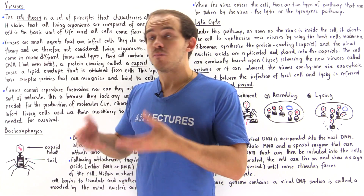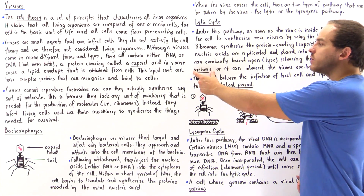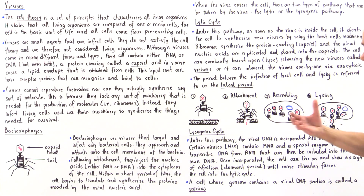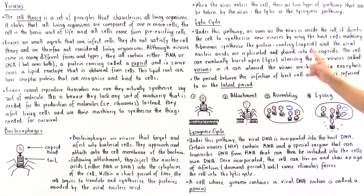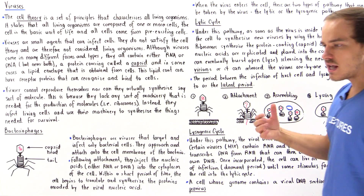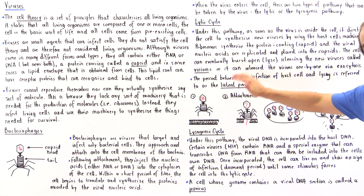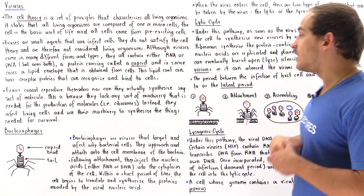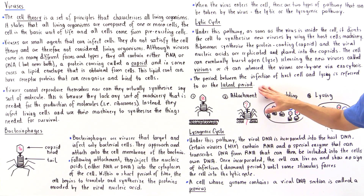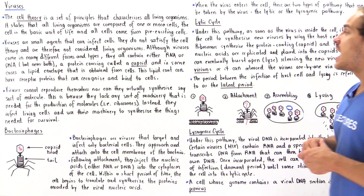Once the cell lyses, it releases all the new viruses. Viruses found outside the host cell are known as virions. Another method by which the cell can release viruses is by undergoing a process similar to exocytosis, using the cell membrane to bring viruses outside the cell. The period between when the virus infects the cell and right before the cell lyses is known as the latent period.